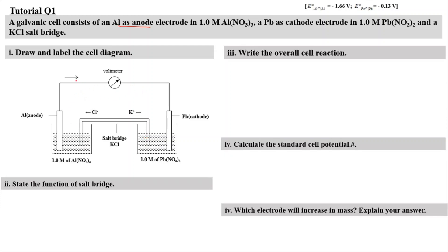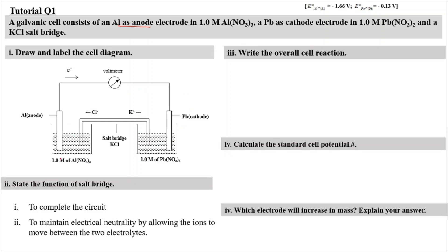You have to label the electron flow, where electrons go from the anode to the cathode. The function of the salt bridge is: first, completing the circuit so that current can flow in a complete circle; and second, to maintain electrical neutrality by allowing K⁺ and Cl⁻ ions to move between the two electrolytes and prevent excess buildup of charges.